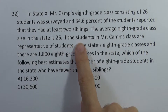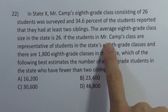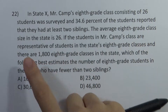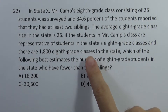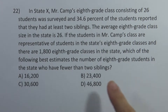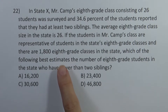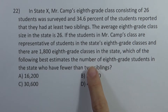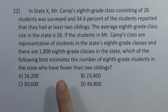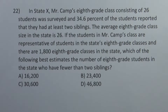Let's go to school. The students in Smitherkamp's class are representative of students in the state 8th grade classes, and there are 1,800 8th grade classes in the state. Which of the following best estimates the number of 8th grade students in the state who have fewer than two siblings? In this class, Smitherkamp's students did a survey with 26 students.